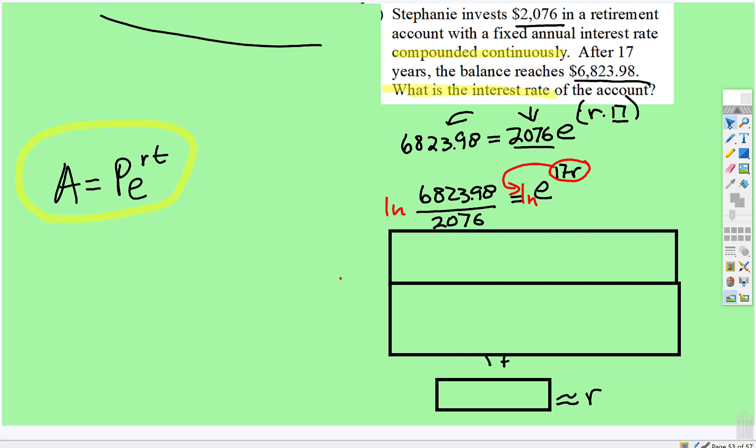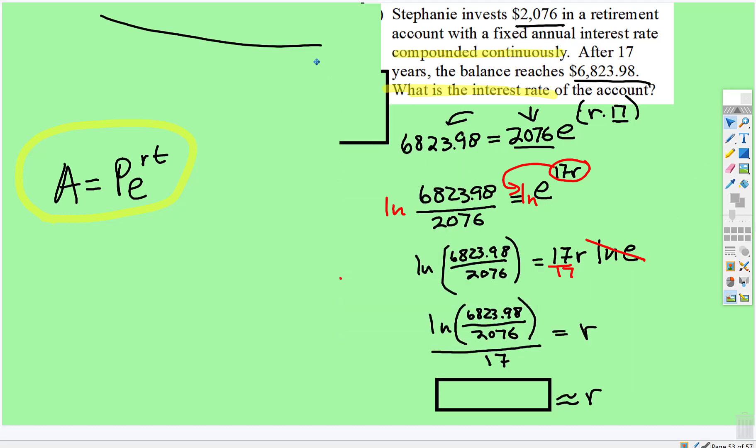And then using the properties of logarithms, the 17r comes down in front. And then once that comes down in front, the natural log of e cancels to 1, and then all we have to do is divide both sides by 17.